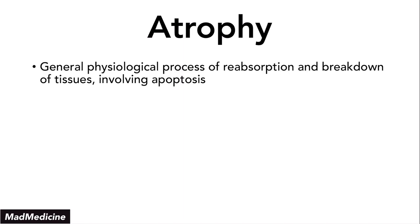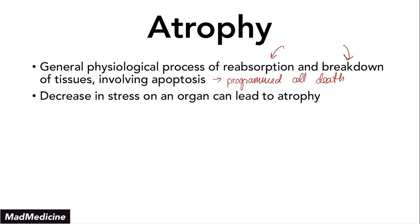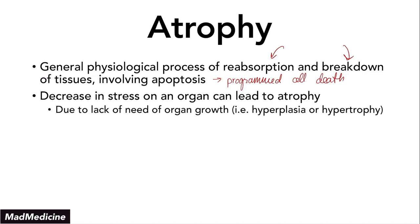Atrophy is a general process in which we have reabsorption or breakdown of tissue, and that's going to involve apoptosis — programmed cell death. A decrease in stress on an organ is essentially the main factor that leads to atrophy, because of a lack of need for that organ growth. There's no more stress, so there's no need for hyperplasia or hypertrophy to exist, and we undo all of that by undergoing atrophy.